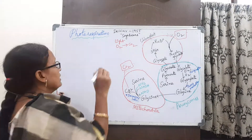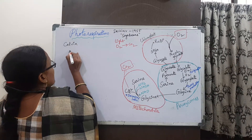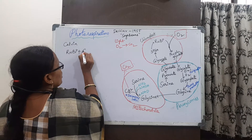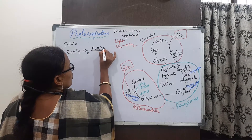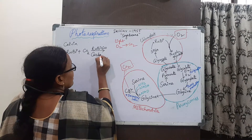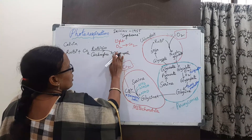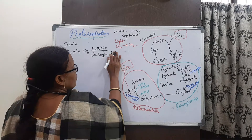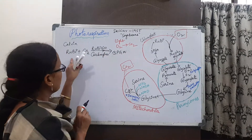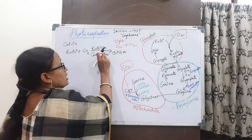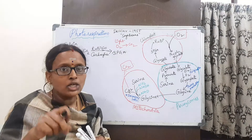Generally, we know that in the Calvin cycle, the first step is that RuBP (ribulose bisphosphate) absorbs carbon dioxide in the presence of Rubisco. So RuBP acts as a carboxylase and enters into the Calvin cycle, producing 3-phosphoglycerate. Rubisco is present abundantly in the leaves and acts as a carboxylase.